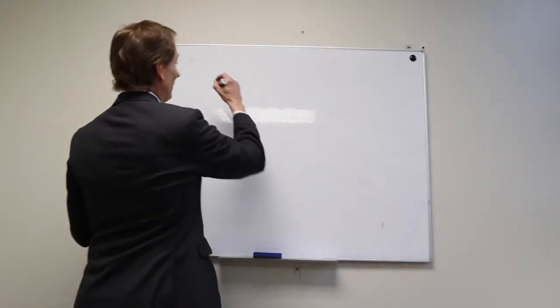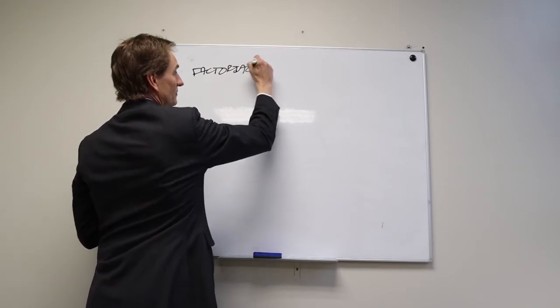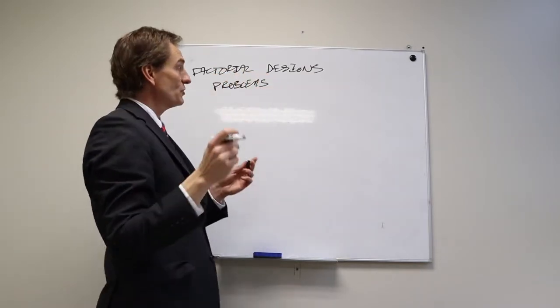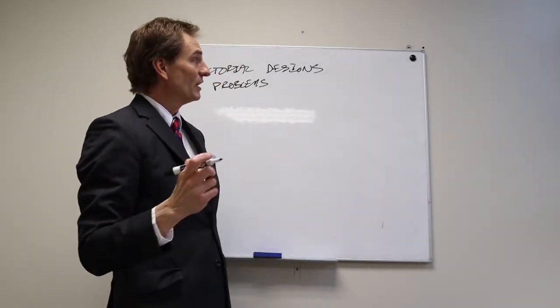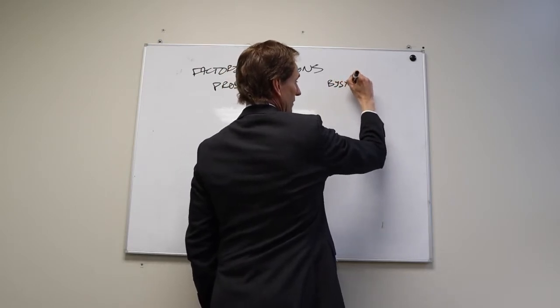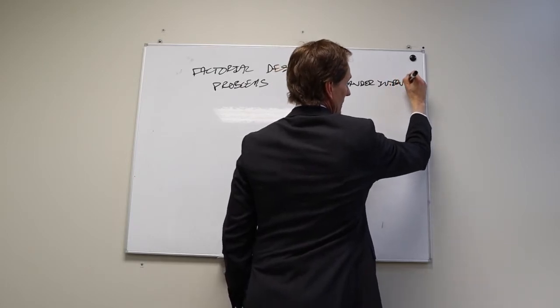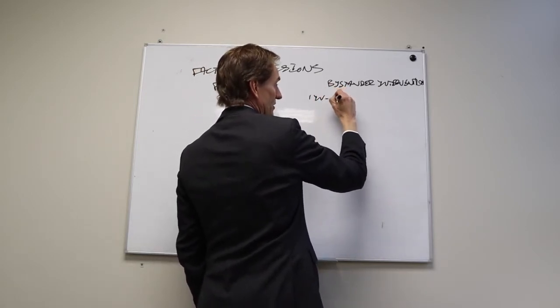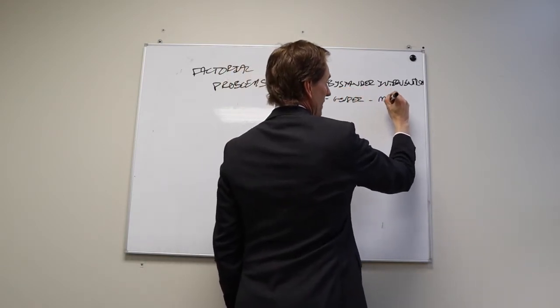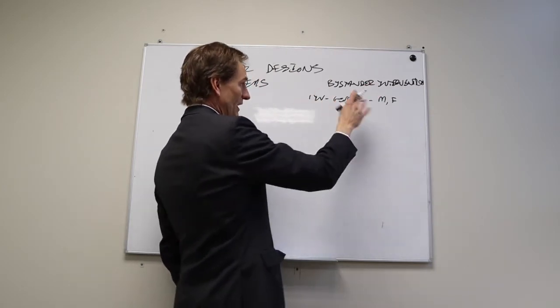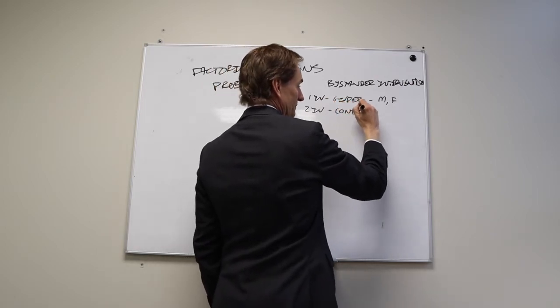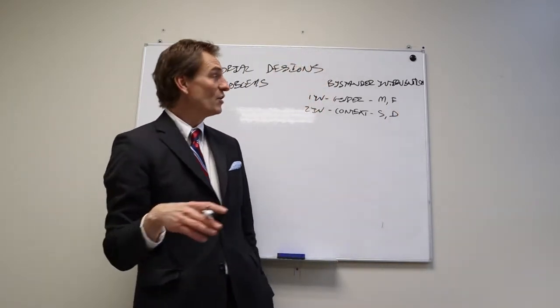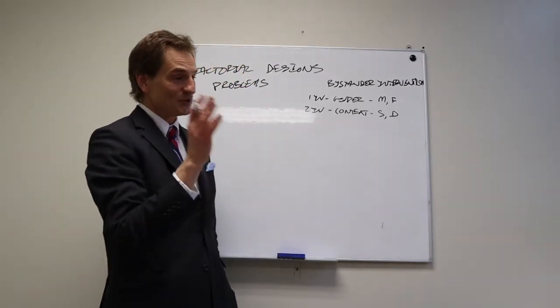Because if you watched my previous lesson, you probably believe that factorial designs are like the best thing since sliced bread, and they are, but they do have some problems. We've been talking about this bystander intervention study in terms of two independent variables.